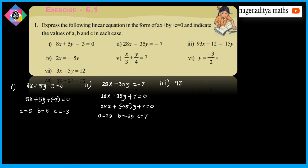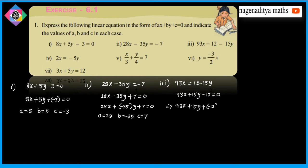Third problem: x is equal to 12 minus 15y. Moving terms to the left hand side gives 93x plus 15y minus 12 is equal to 0. This can be written as 93x plus 15y plus (minus 12) is equal to 0. Comparing, A is equal to 93, B is equal to 15, and C is equal to minus 12.